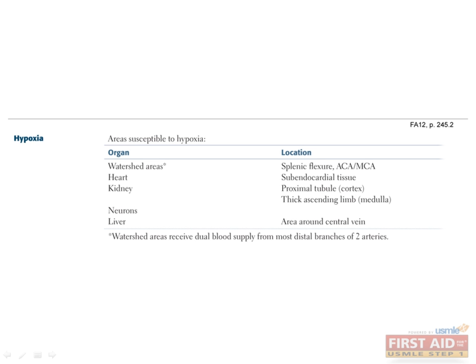Now that we understand how individual cells respond to hypoxia, let's think about how hypoxia affects whole areas of the body. Certain tissues are more susceptible to hypoxia than others because some areas are perfused by blood with lots of oxygen and others with less. For example, watershed areas — areas that receive blood supply from the distal-most branches of two arteries — receive relatively oxygen-poor arterial blood. Any decrease in blood pressure will prevent these areas from getting adequate oxygen, including the splenic flexure and areas in the brain. Similarly, the subendocardium in the heart, the proximal tubule in the kidney, the thick ascending limb, and the area around the central vein in the liver all receive distal blood supply, making them susceptible to hypoxia. In addition, all neurons are susceptible to hypoxia, probably because they require so much oxygen that even a normal blood supply is still pretty delicate.